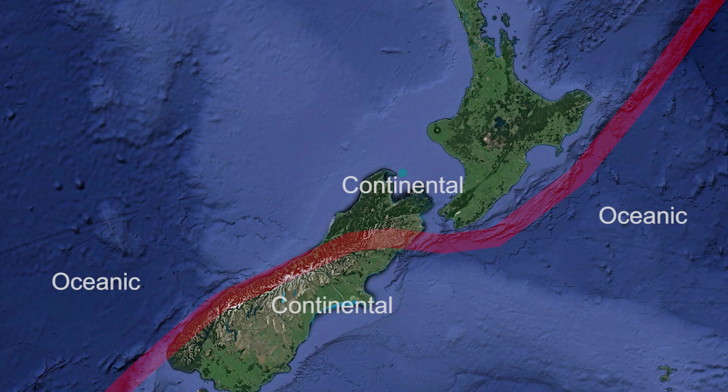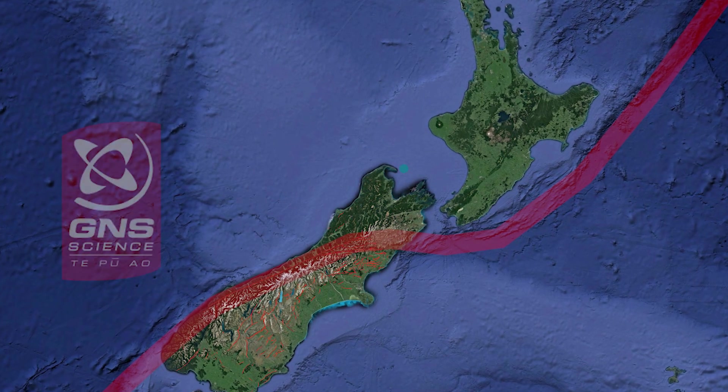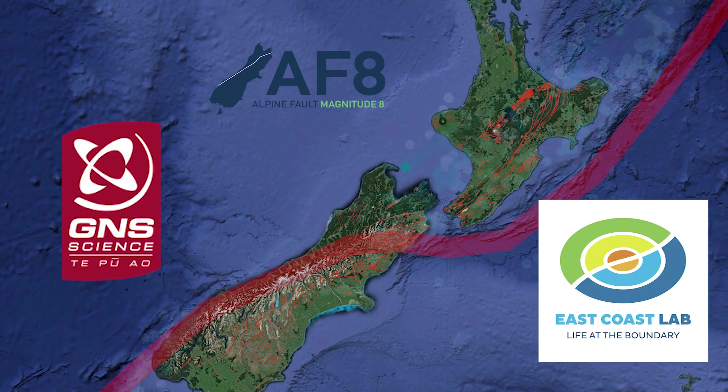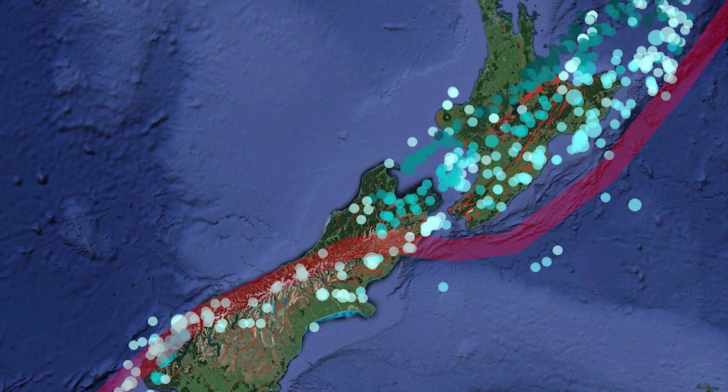New Zealand sits right across this plate boundary. It's quite a complicated plate boundary — different in different places. One thing to bear in mind is that earthquakes are not just produced along the plate boundary; the earth's crust on either side is broken up by many faults, which is why we often get earthquakes on fault lines in other parts of the country, at some distance from the plate boundary itself.